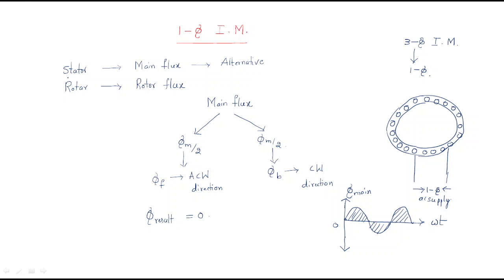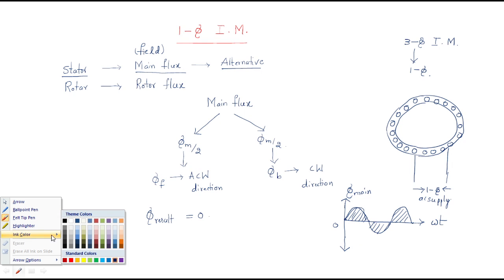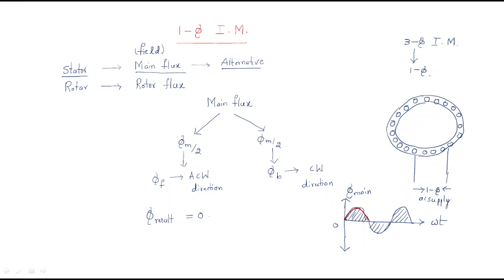The main flux from the stator is alternating in nature. This flux can be divided into two parts. The first part has a maximum value of φm/2 and is of positive nature — it is called the forward flux, rotating in the anti-clockwise direction.